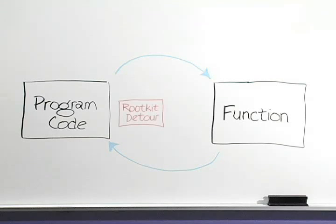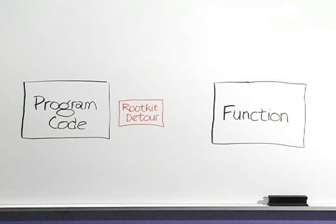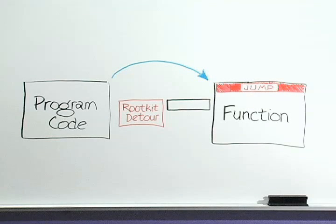Now let's add a rootkit. In this example, the function code provides a list of what files are in a directory. At some point, the program needs a directory listing, so it calls the function. However, the rootkit has taken the first five bytes of the function code and moved them to a memory location the attacker chose, replacing those bytes with a jump instruction. When the program's request hits the start of the function, the jump makes it go to the memory location of the rootkit's detour function.